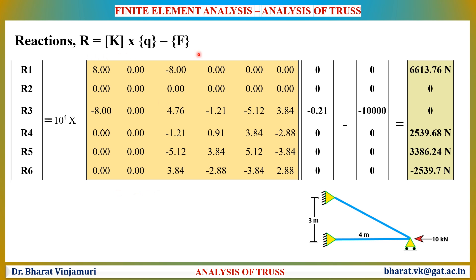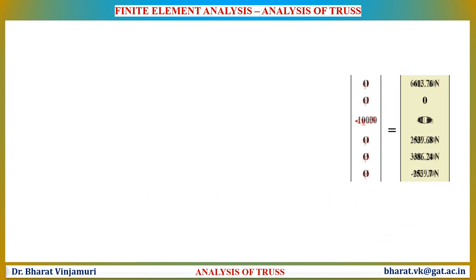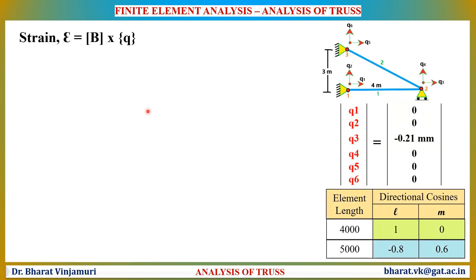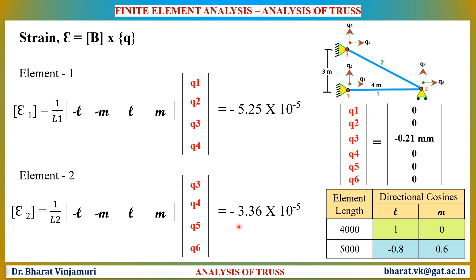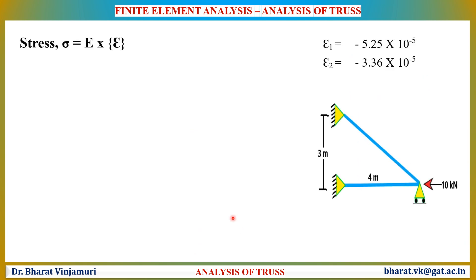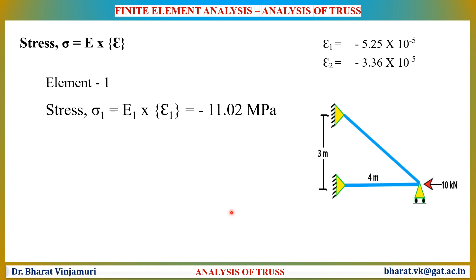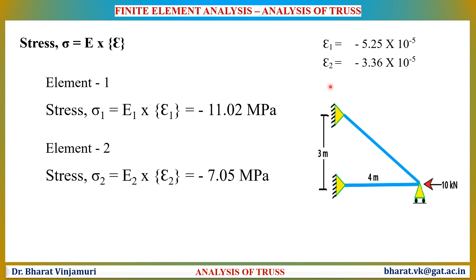The reactions can be determined by the standard equation. The strain for element 1 is −5.25×10⁻⁵ and for element 2 is −3.36×10⁻⁵. The stress is determined by multiplying the elastic modulus with the corresponding strains. In this case, both elements have compressive stresses, as indicated by the negative sign.